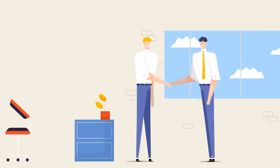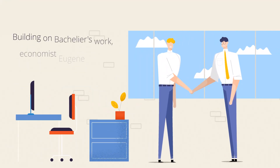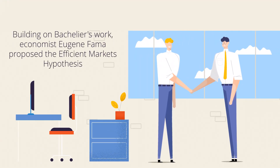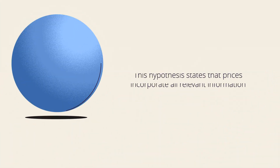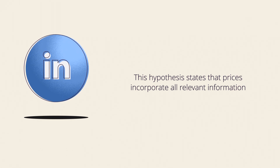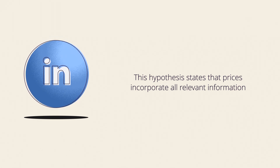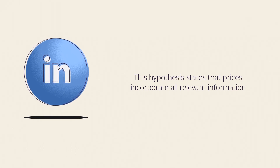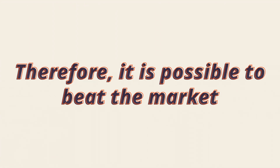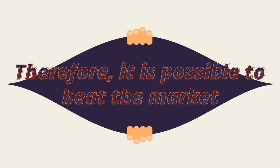Building on Bachelier's work, economist Eugene Fama proposed the Efficient Markets Hypothesis. This hypothesis states that prices incorporate all relevant information and only change in response to new information. Therefore, it is possible to beat the market.